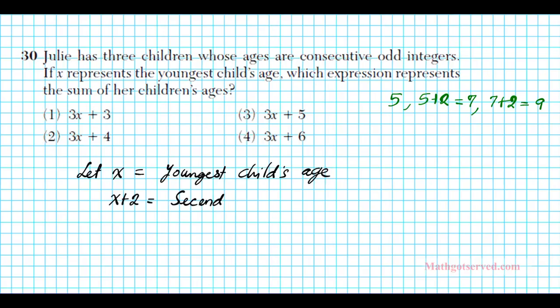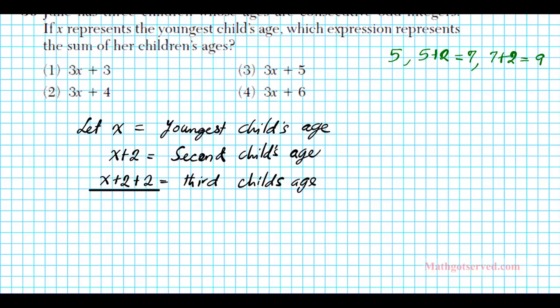Let's put it again, second child's age, because they're consecutive. And consecutive odds are 2 units apart from each other. What is the third child's age? It's going to be x plus 2 plus another 2. So it's going to be x plus 2 plus 2. It's just like going from 5 to 7 to 9. From 5 to 9, you have to add 2 twice. So this would be the third child's age. So, since which expression represents the sum, the sum of the ages just simply involves adding up all these numbers together. What is the sum of these numbers? x plus x plus x is 3x. 2 plus 2 plus 2 is 6. So we have 3x plus 6 as the sum of the three ages.